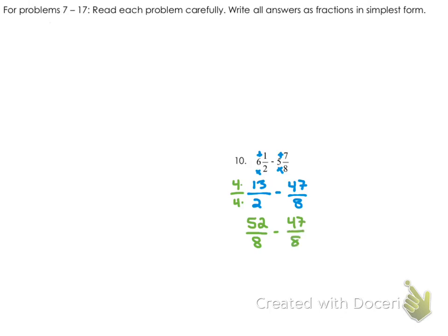We have a common denominator now. So doing this method, we're just going to take 52 and subtract 47 from that, which is 5. So we have 5 on the top, our denominator stays the same as 8, and that's our answer, 5 eighths.